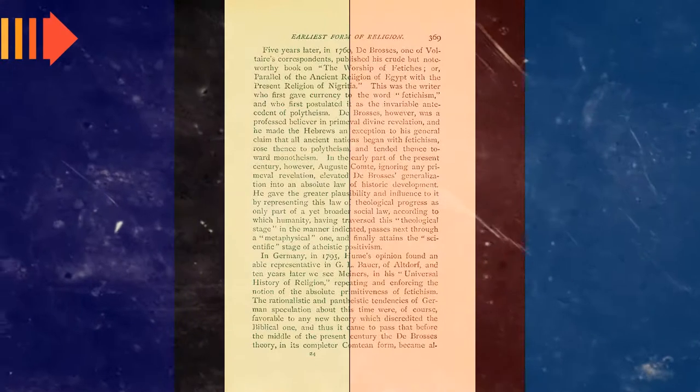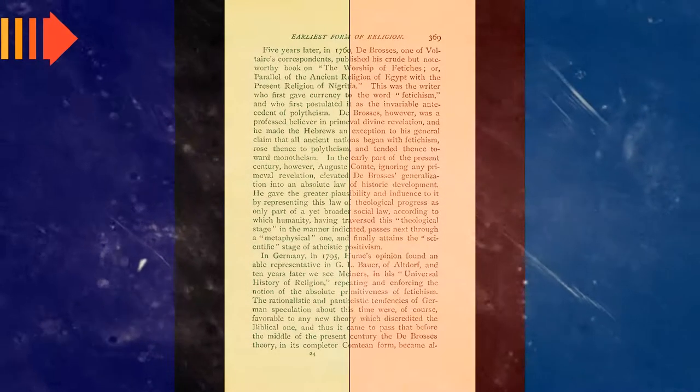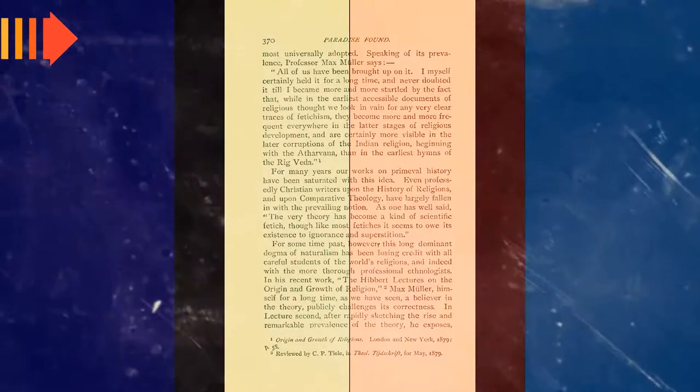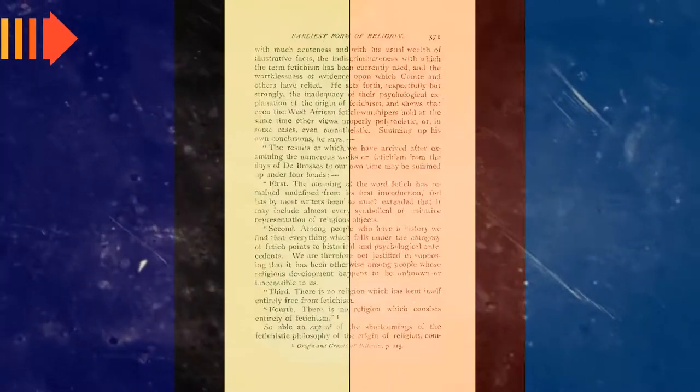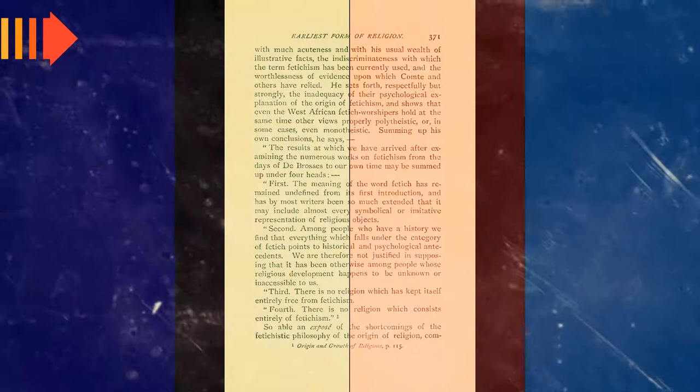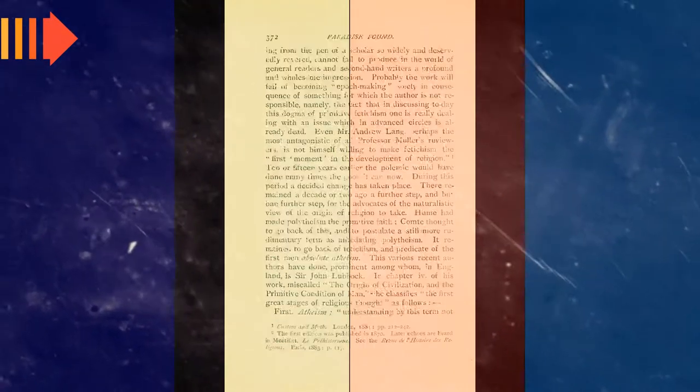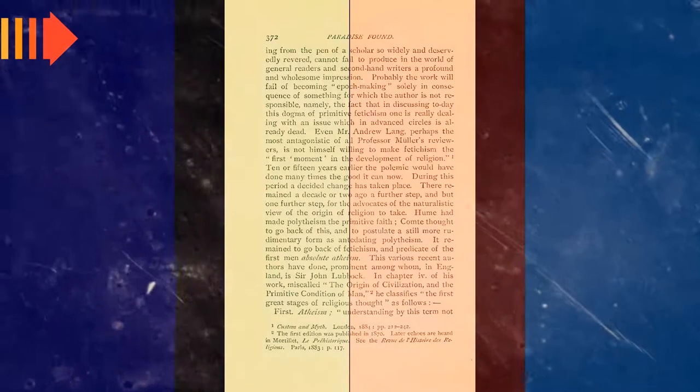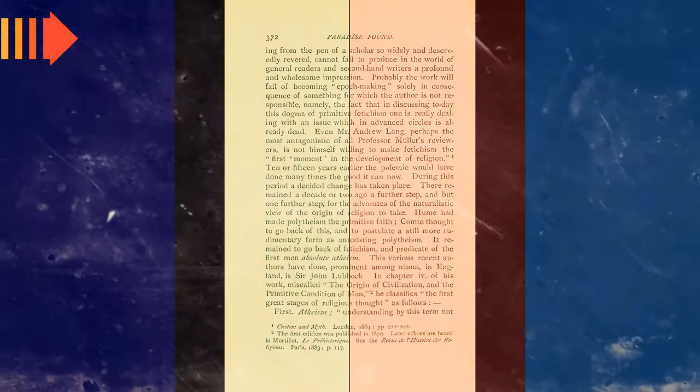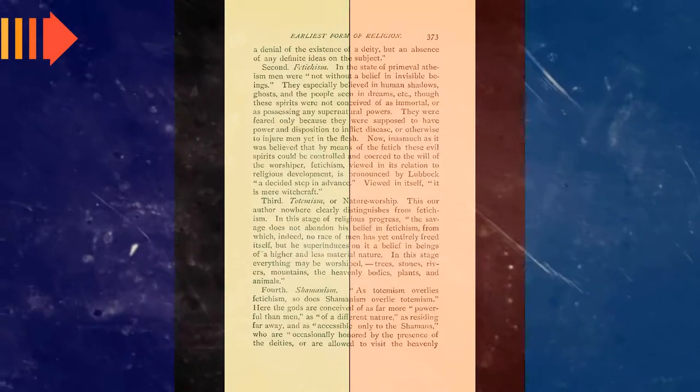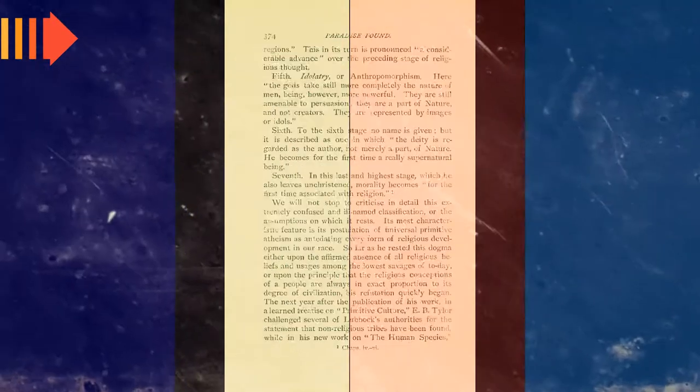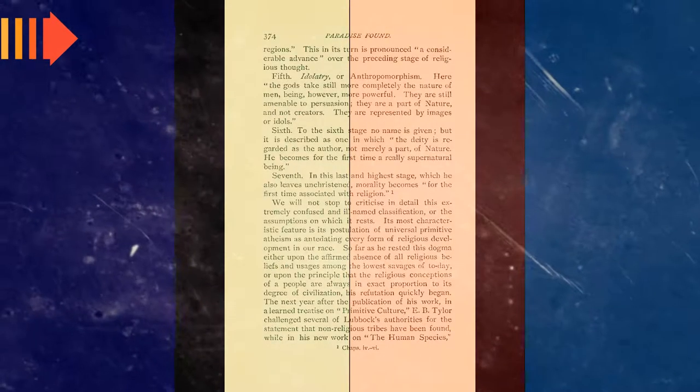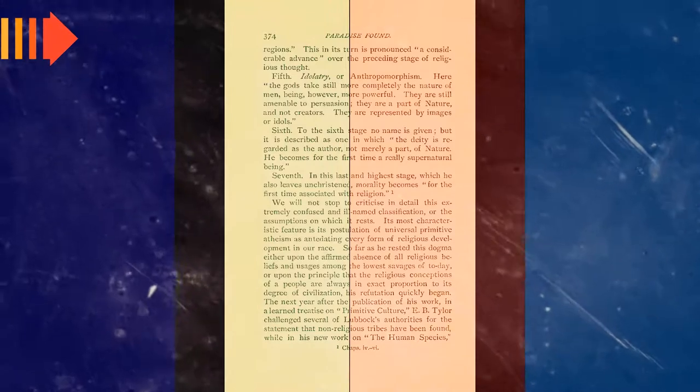Some subsequent occultists have followed Blavatsky, at least to the point of tracing the lineage of occult practices back to Atlantis. Among the most famous is Dion Fortune in her Esoteric Orders and Their Work. Drawing on the ideas of Rudolf Steiner and Hans Hörbiger, Egon Friedell started his book Kulturgeschichte des Altertums, and thus his historical analysis of antiquity, with the ancient culture of Atlantis. The book was published in 1940.